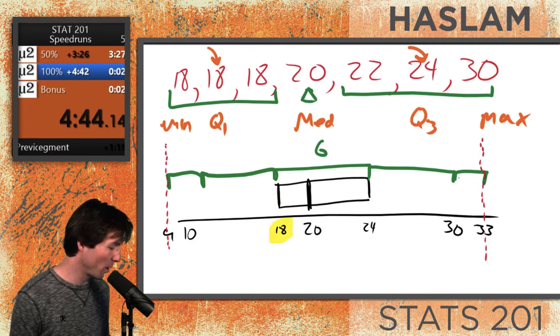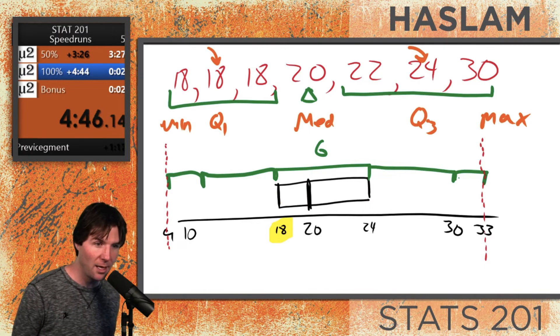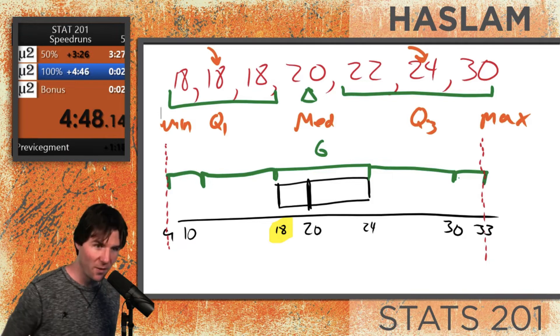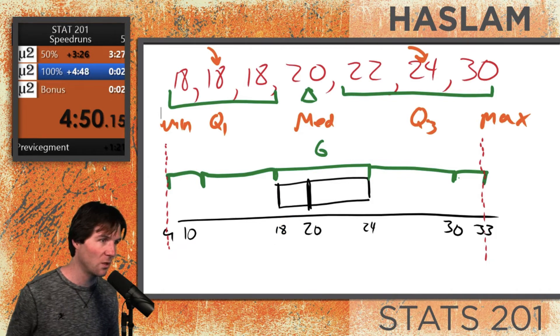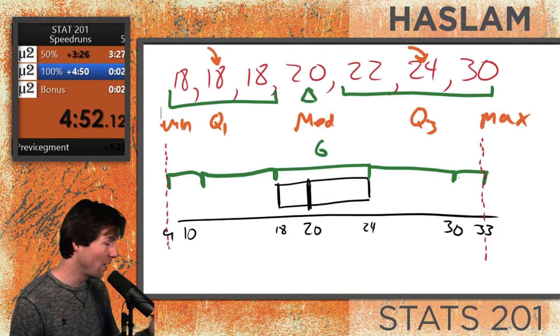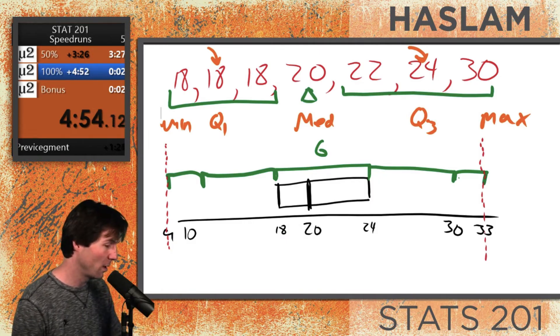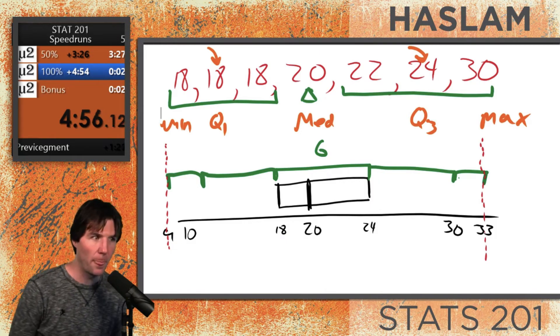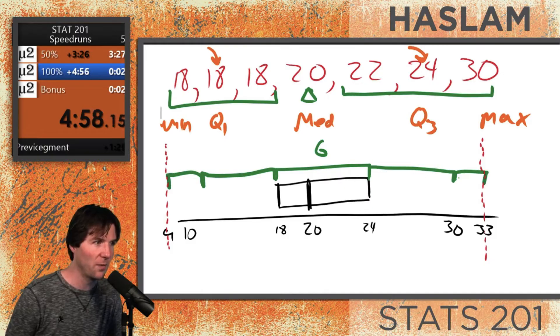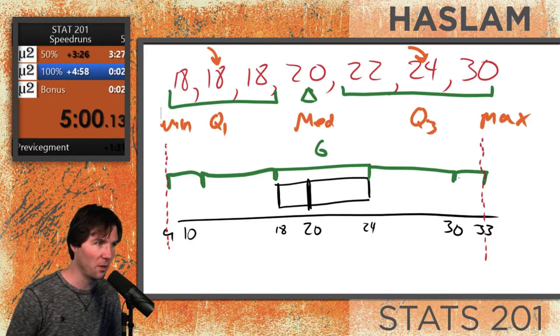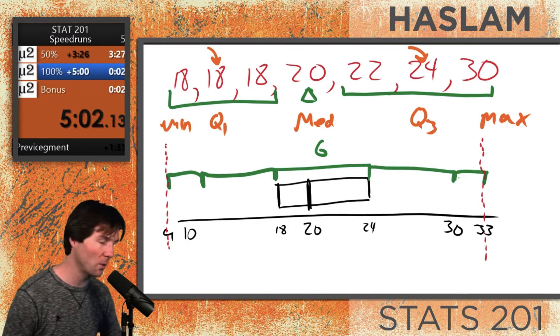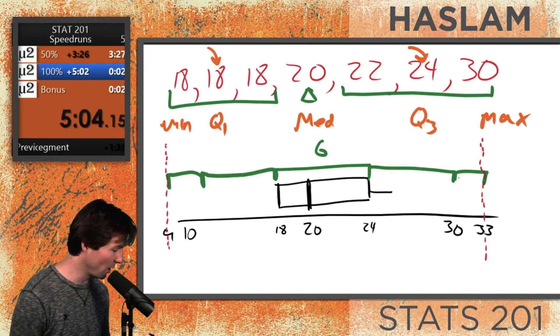This value of 18 right here represents the 25th percentile and the median. Those are the fences, and there is no lower whisker. But the upper whisker would go to where? Where would the upper whisker go to? The upper whisker goes to the highest point right here at 30.